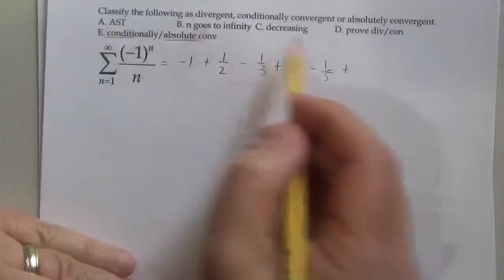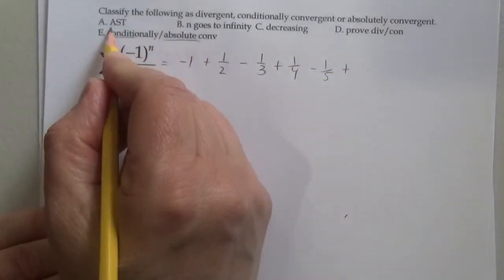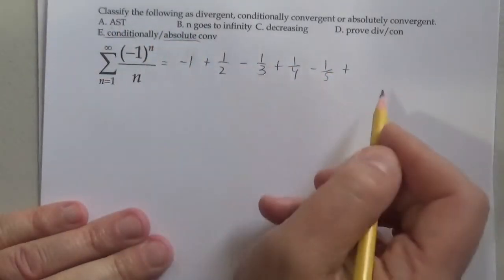We have to satisfy these criteria. Number one is letter A: is this an alternating series? Well, clearly yes, it goes back and forth.